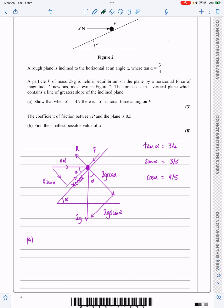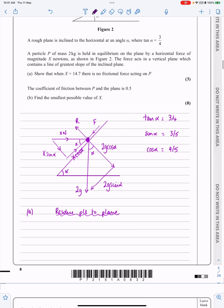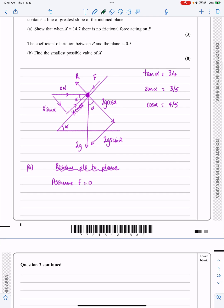If I want to resolve parallel to the plane, I'm going to assume F is equal to 0 and show that X is equal to 14.7. If F is equal to 0 and I'm resolving parallel to the plane, what forces have I got? Just those two. That makes it a little bit easier.